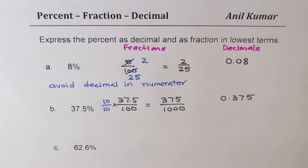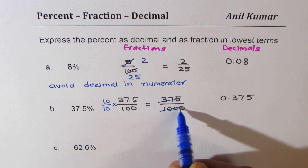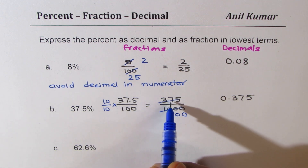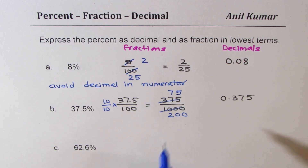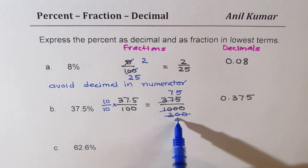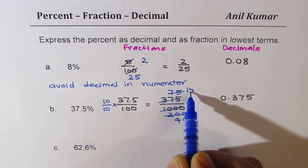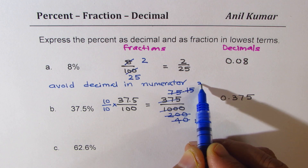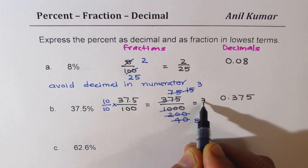Now we should simplify by dividing by common factors. You can do it in series. Let us first divide by 5 — we get 75 over 200. Dividing by 5 again gives 15 over 40. We can further divide by 5, giving us 3 over 8. So what we get finally is equivalent to 3 over 8.